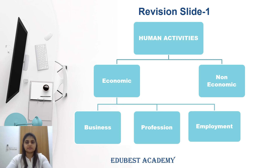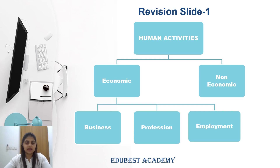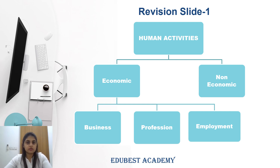Let's begin by revising the previous video slides, then we will move forward with the next topics of this chapter. In the last video, we had learned that human activity is divided into two parts, that is economic and non-economic activity. Economic activity is an activity done to run our livelihood, while non-economic activities are performed for mental satisfaction.